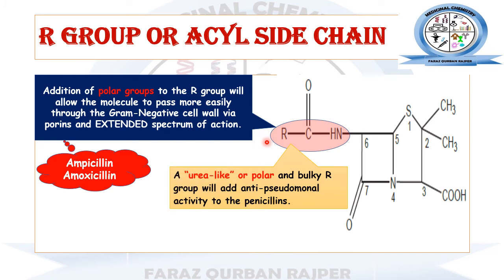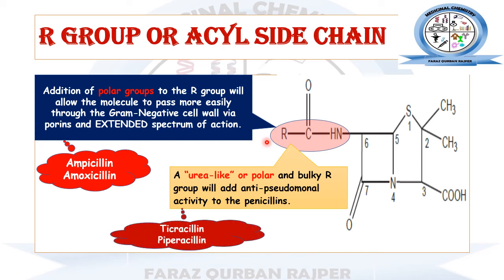We can also modify the R group with a urea-like polar functional group. The effect of these penicillins is to enhance the spectrum against anti-pseudomonal species — they will be effective against Pseudomonas aeruginosa. The examples of penicillins that have a urea-like polar functional group at the six-position acyl amino side chain are ticarcillin and piperacillin.